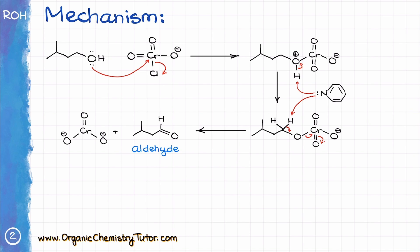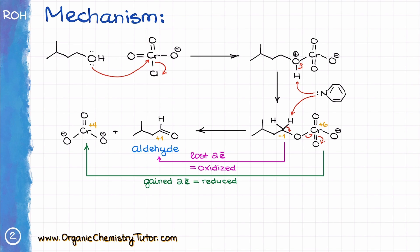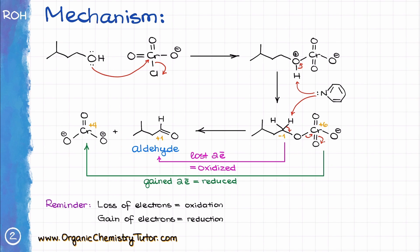The last step is the redox step in this reaction, since the oxidation state of carbon changes from negative 1 to positive 1, and the oxidation state of chromium at the same time goes from positive 6 to positive 4. So in other words, the carbon is oxidized and chromium is reduced. And since we never care about what happens to our inorganic co-products, we classify this reaction as an oxidation since the carbon formally lost the electrons. As a quick reminder, the loss of electrons is oxidation and gain of electrons is reduction.